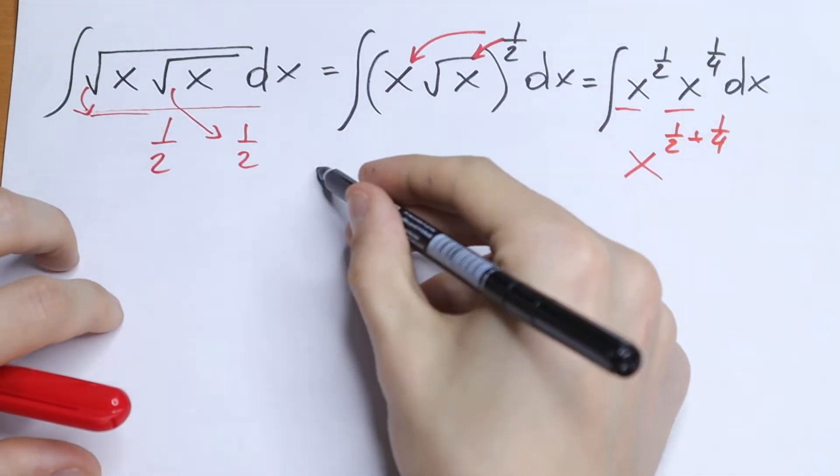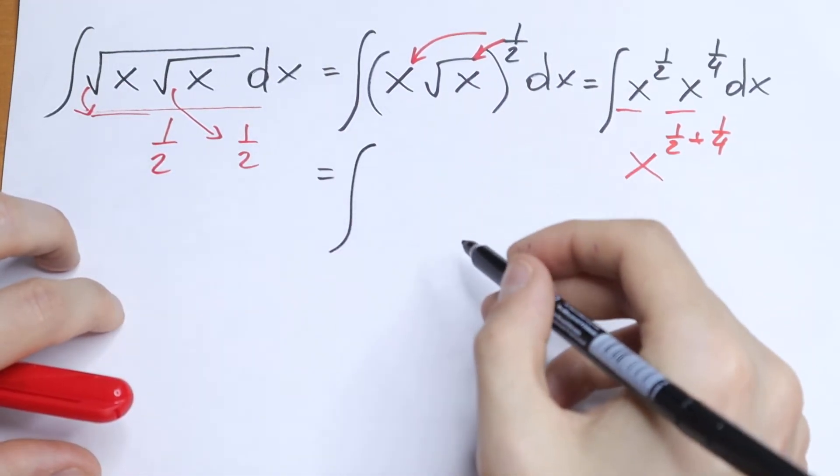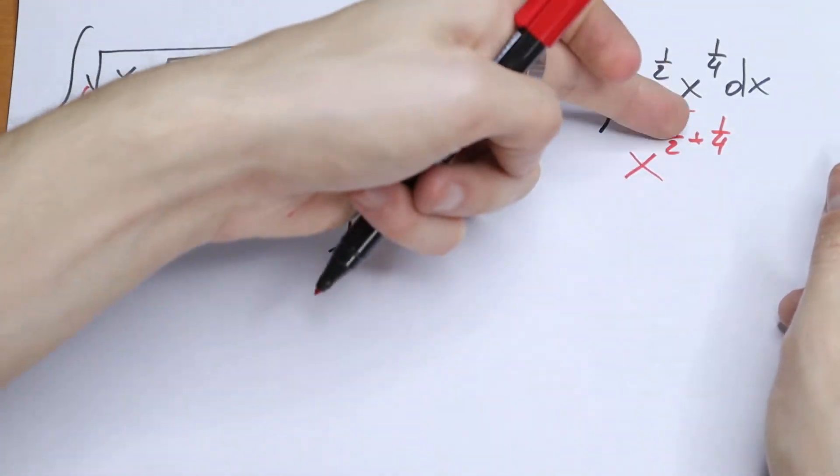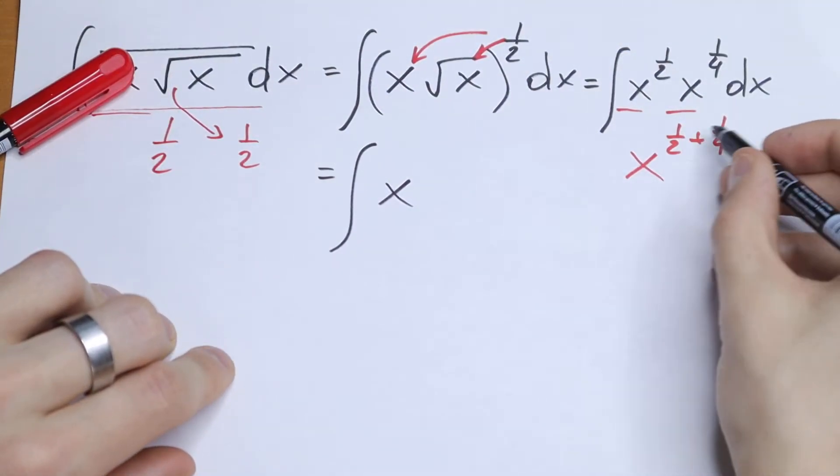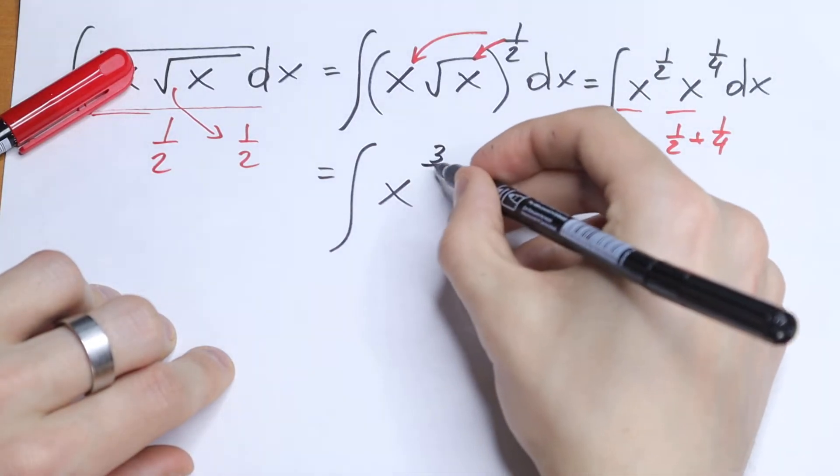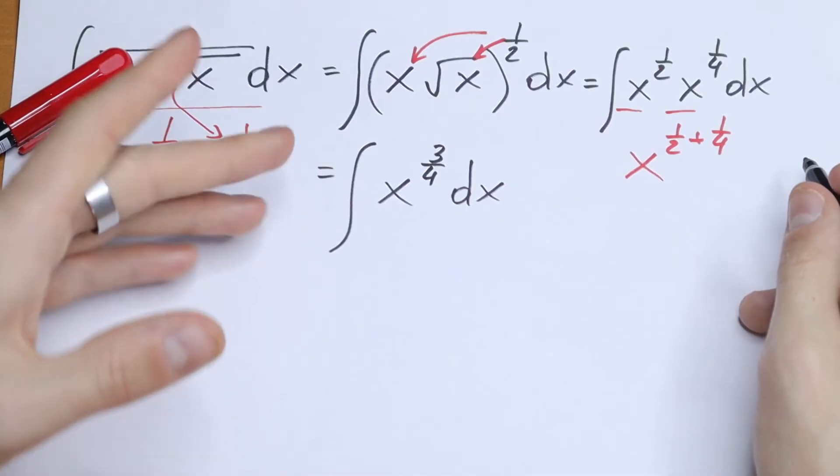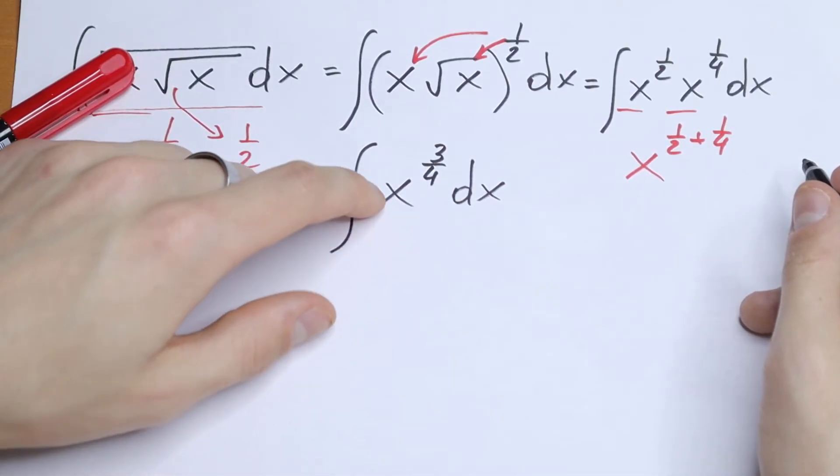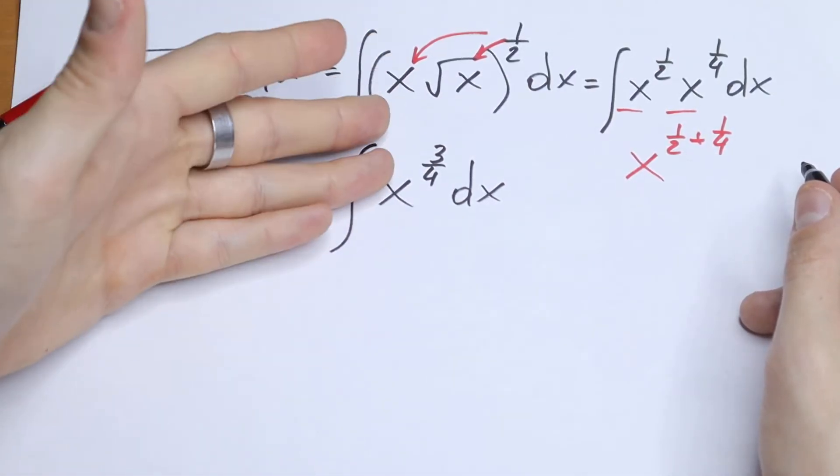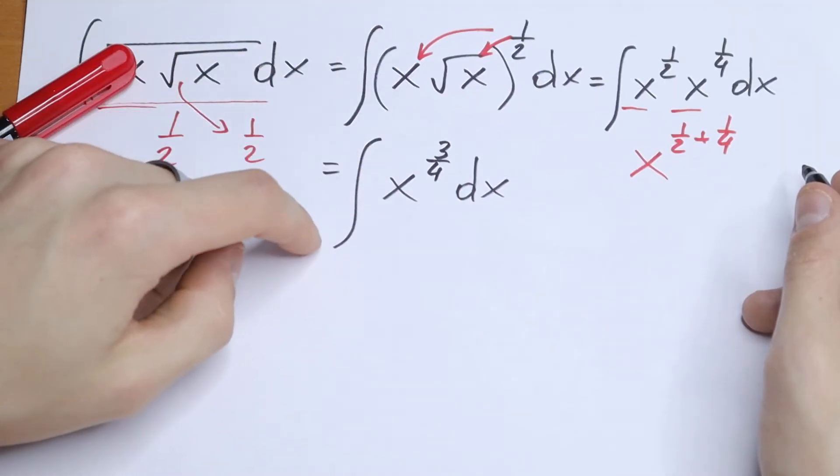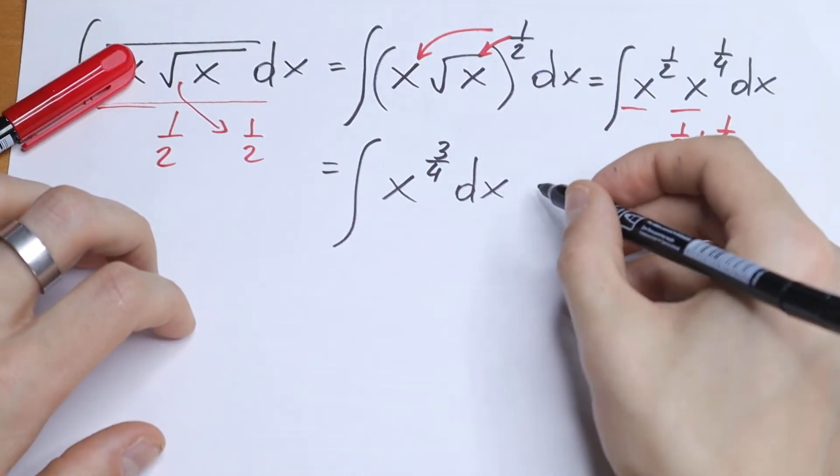As a result we will have that this integral will be equal to integral of x, and if we add 1 half plus 1 fourth we will have 3 fourths dx. And this is our classic case, but instead of like a simple x squared that is pretty good to find the integral, we have a fraction, we have 3 over 4. So nothing changes.